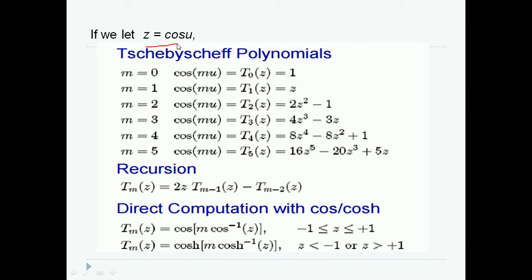If you take Z equals cos U, we can write a Tschebyshev polynomial. For M equals 0 coefficient, cos(MU) can be written in terms of Tschebyshev polynomial T0(Z) equals 1. Likewise, when M equals 1, I can write T1(Z) equals Z, and M equals 2, I can write T2(Z) equals 2Z squared minus 1, likewise till M equals N minus 1.